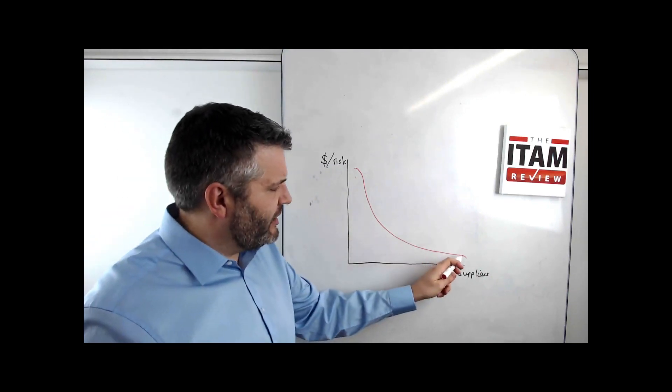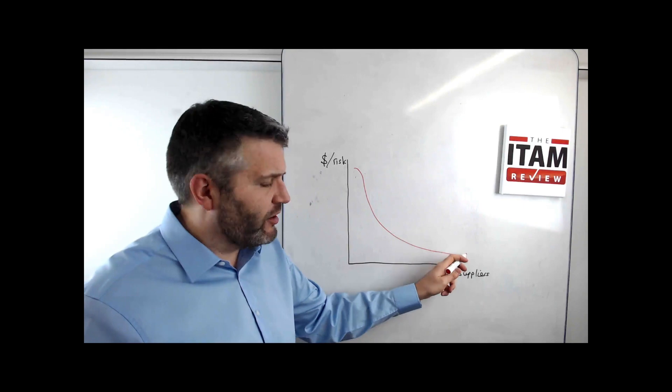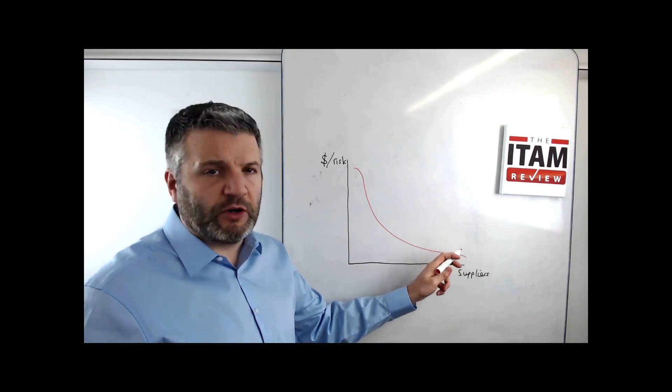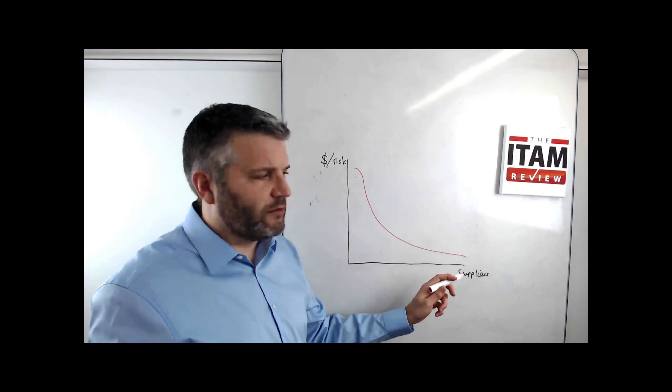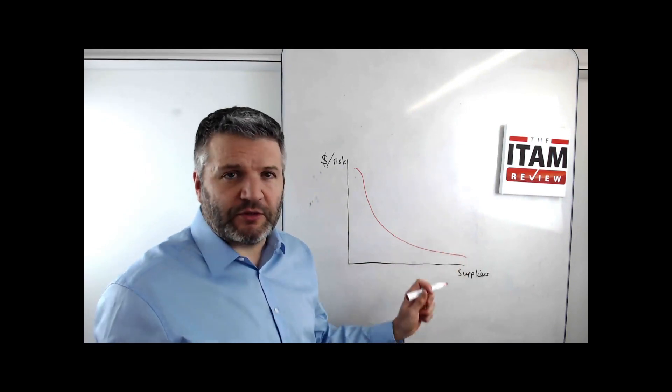And then you've got right down here, you've got George in accounts that is the only guy in the whole company that's got that piece of software and it costs $40. It's valuable to him, but it's not valuable to everyone else. And there's a long tail of that sort of stuff.